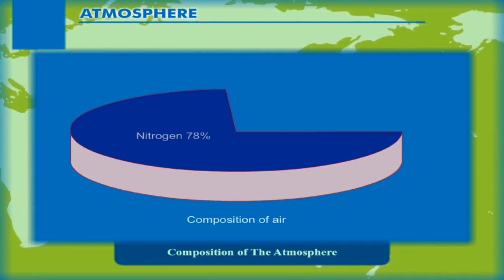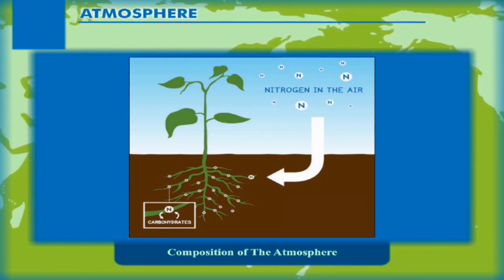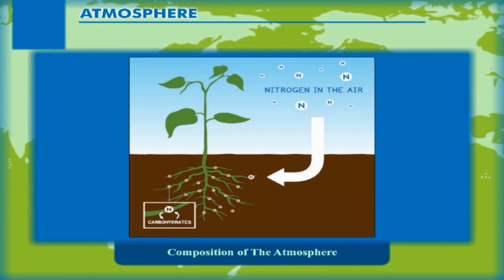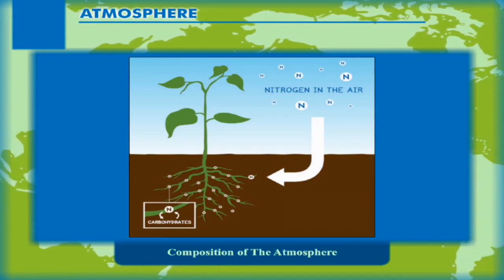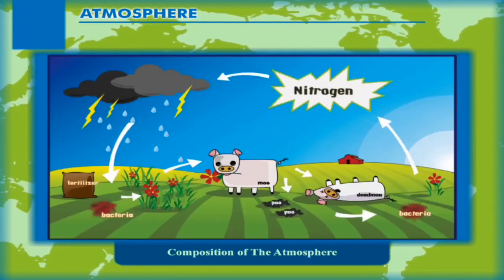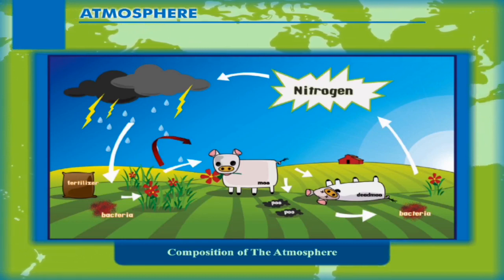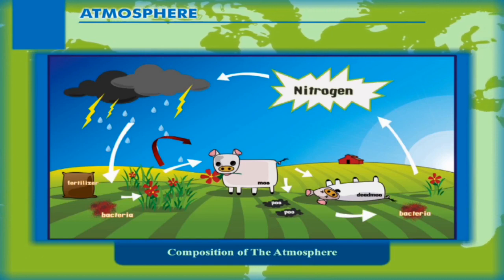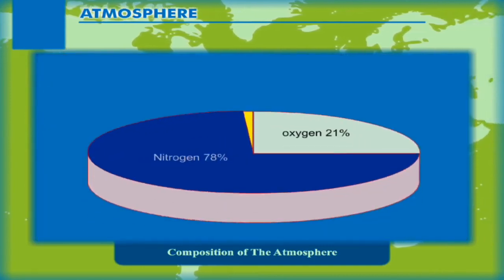Nitrogen: The most abundant gas, nitrogen is useful for the survival of plants. Atmospheric nitrogen is converted into nitrogen compounds by nitrogen-fixing bacteria present in the soil. Plants absorb nitrogen compounds and convert them to protein. Animals take this protein by eating plants or other animals. Nitrogen returns to the atmosphere when denitrifying bacteria act on the waste and dead bodies of plants and animals.